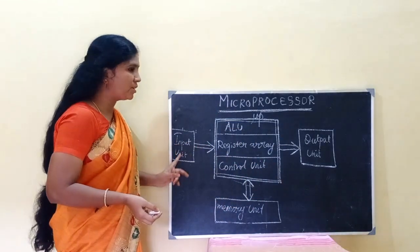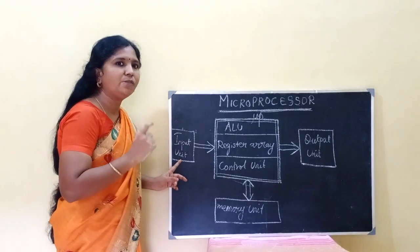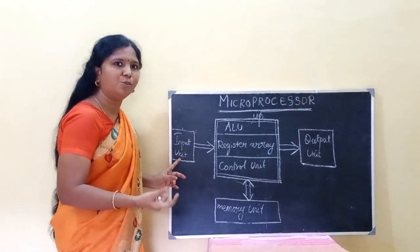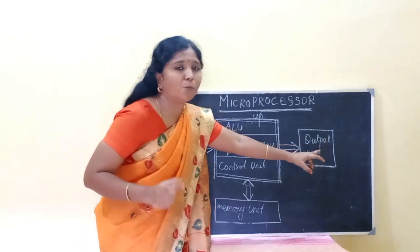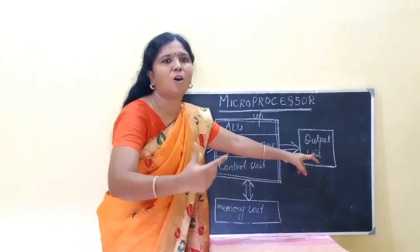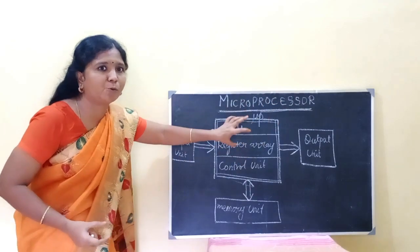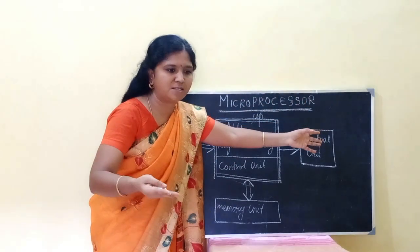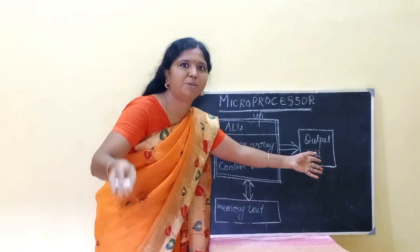Input unit: it is used to give input to the microprocessor — for example, keyboard or mouse. Output unit: it only provides output — for example, a printer or monitor.